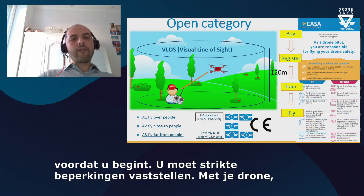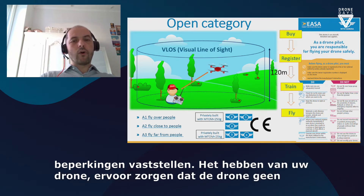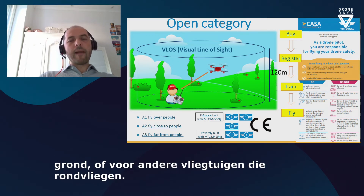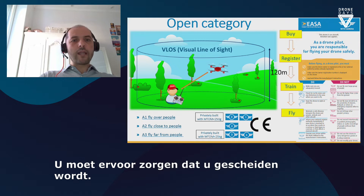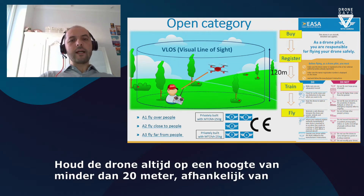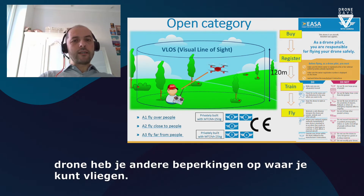The limitations include: always keeping your drone in visual line of sight, making sure your drone is not posing a risk to other persons on the ground or to other aircraft flying around. If you see a manned aircraft flying in the area, you need to ensure your drone is well separated from it, and if necessary, land immediately. Always keep the drone at a height below 120 meters. Depending on what kind of drone you have, there are other limitations in terms of where you can fly.